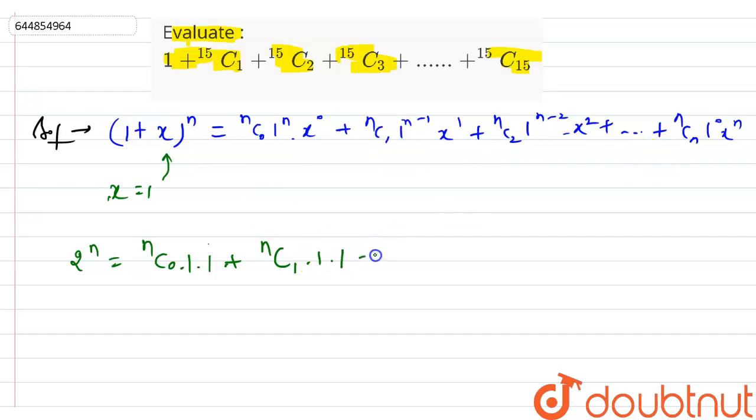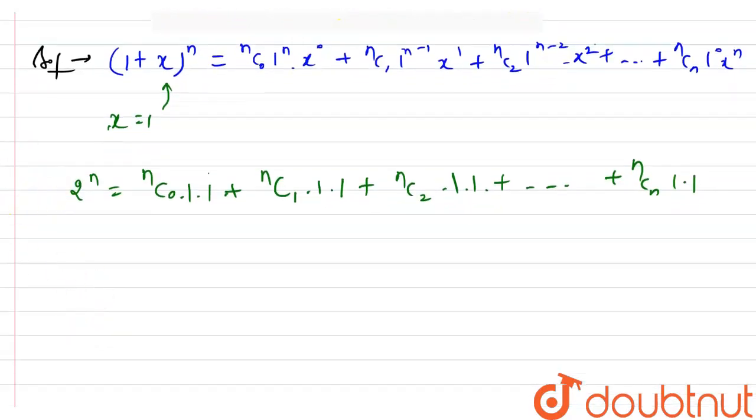I'm writing 1 times 1 which means 1 squared is 1, plus and so on plus nCn * 1 * 1, which is 1 again. If I put my n equals to 15 in over here, I will get 2^15.